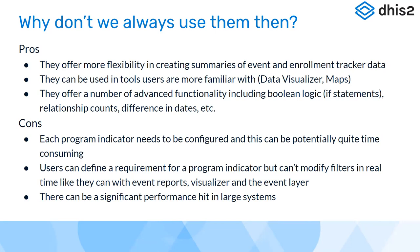What are the disadvantages? Each program indicator needs to be configured manually in the application. For example, if you want to calculate a date difference, that needs to be set in the filter section of the program indicator. In this session we are not going to see how program indicators are configured — we are going to see how they are used for analysis. Configuration is something learned in the Configuration and Tracker Academy. Another disadvantage is that you can define a filter when creating a program indicator, but you cannot change the filter when generating reports in real time, because the program indicator has already been set. All you can do is generate that program indicator using the data visualizer app.